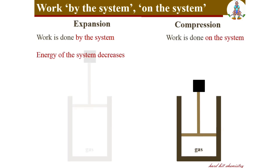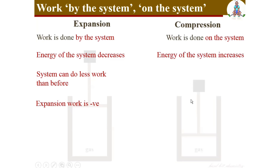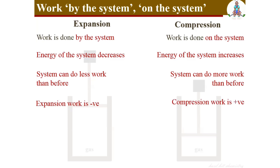In the case of work done by the system, energy of the system decreases because part of its energy is used to do the work. As the energy of the system decreases, it can now perform only a lower amount of work than before. That is why work done in expansion is denoted with a negative sign. On the other hand, for compression work, when work is done on the system, energy of the system increases, causing the system to do more work. That is why work done on the system is denoted with a positive sign.